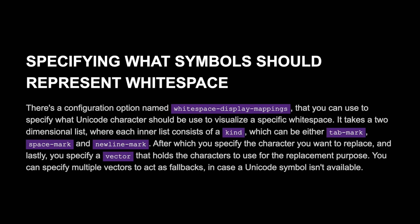There's a configuration option named whitespace-display-mappings that you can use to specify what Unicode character should be used to visualize a specific whitespace. It takes a two-dimensional list where each inner list consists of a kind — which can either be tab-mark, space-mark, or newline-mark — after which you specify the character you want to replace, and lastly you specify a vector that holds the characters to use for the replacement purpose. You can specify multiple vectors to act as fallbacks in case a Unicode symbol isn't available.